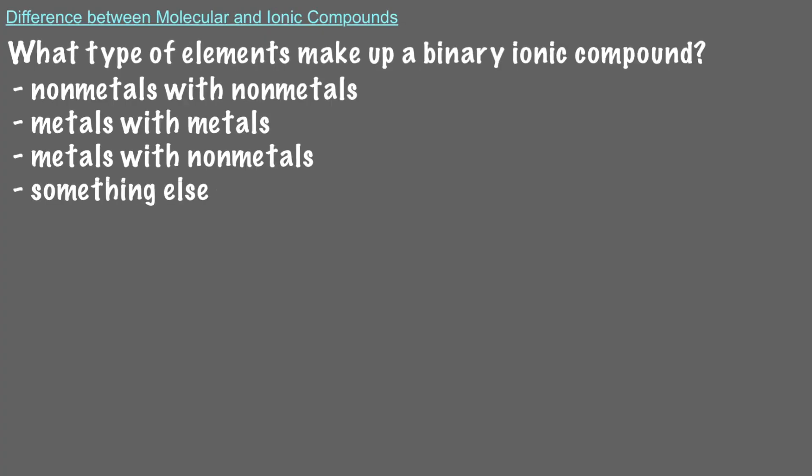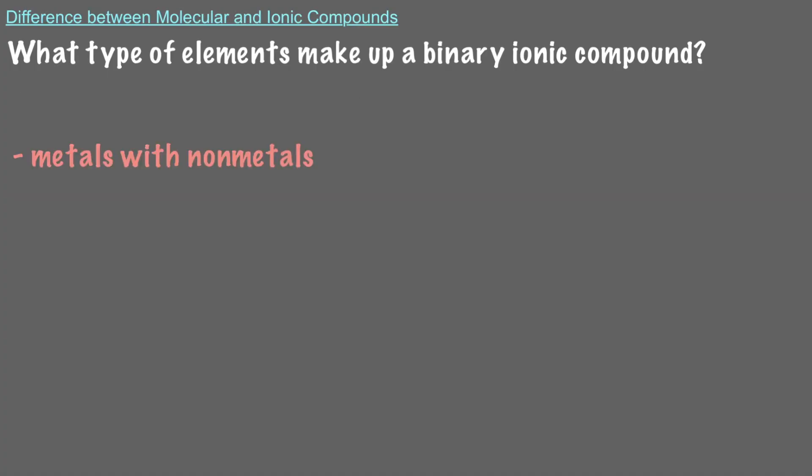Let's review quickly. What type of elements make up a binary ionic compound? Binary ionic compounds are made up of a metal and a nonmetal, specifically a metal cation and a nonmetal anion.